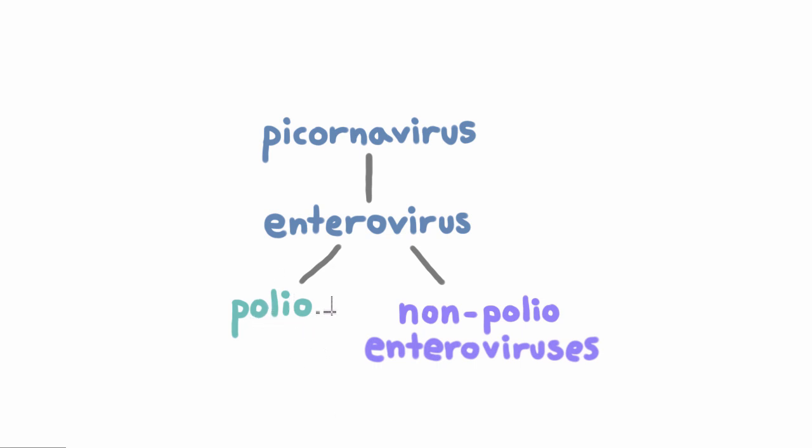Remember, poliovirus is in the enterovirus genus, in the picornavirus family. And now we're going to talk about the other viruses in the enterovirus genus. Polio is almost eradicated, whereas these other viruses are absolutely everywhere. You've all had them, and you'll all see them many times, especially among kids.